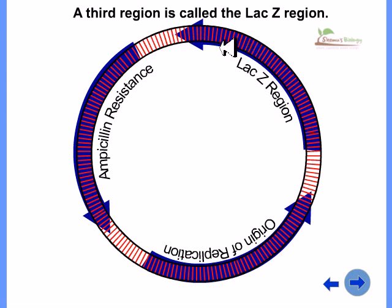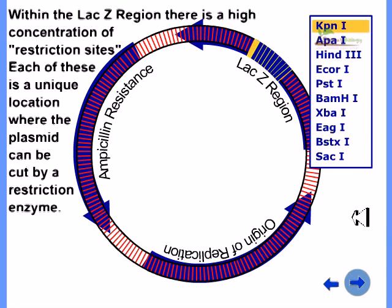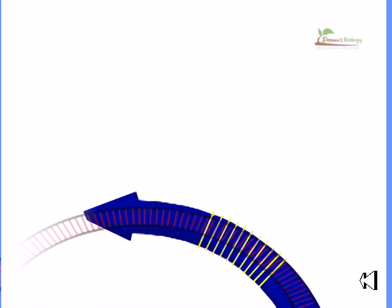The third region is called the lac Z region which is coding the structural proteins which is indeed needed. And this region also consists of many different restriction sites. Each of these is a unique location where the plasmid can be cut by using the restriction enzyme.